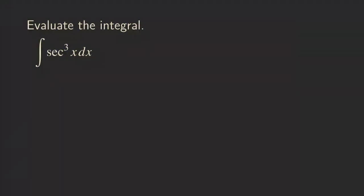So now what do we do here? In this case, we need to do something else. We actually got to try different things. One way to do it is to break up secant cube x into secant x times secant square x. You may ask why we want to do that. At this point, we don't need to think too much — we just want to break it as a product first so that we have more things to work with.